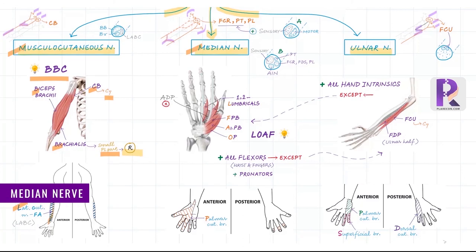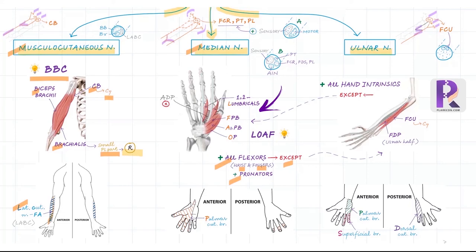Moving on to the median nerve: in the arm it gives off no branches. In the forearm, it supplies all the flexors of the wrist and fingers except the one-and-a-half ulnar-side muscles supplied by the ulnar nerve, and it also supplies the two pronator muscles. In the hand, the median nerve supplies five muscles remembered by the mnemonic LOAF: the first and second lumbrical muscles, and three thenar muscles — opponens pollicis, abductor pollicis brevis, and flexor pollicis brevis — but not the more ulnarly placed adductor pollicis. The palmar cutaneous branch, given off just proximal to the wrist, supplies the thenar eminence and radial half of the palm, while terminal digital branches provide sensation to the entire volar surface and distal dorsal surface to the DIP of the radial three and a half fingers.